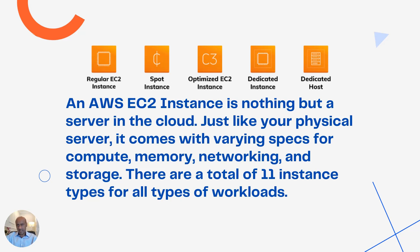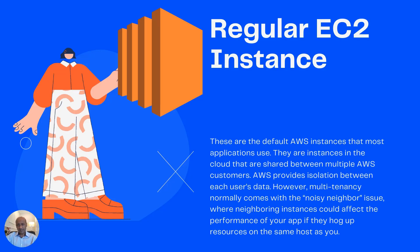Just like your physical server comes with different specs, there are AMIs — Amazon Machine Images — which are pre-configured software already installed on these servers, so you don't have to do a whole lot. The important thing is to pick the right EC2 instance type. I've picked the five most popular ones. Out of the 11 types for different workloads: regular EC2, spot instance, optimized EC2, dedicated instance, and dedicated host.